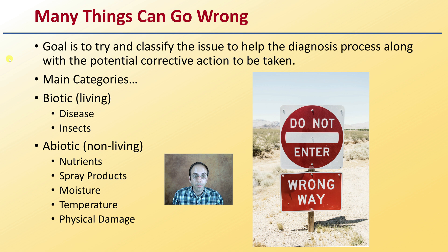The main categories covered will be biotic and abiotic. Under biotic, or living, we have diseases and insects. Abiotic will look at nutrients, spray products, moisture, temperature, as well as physical damage.